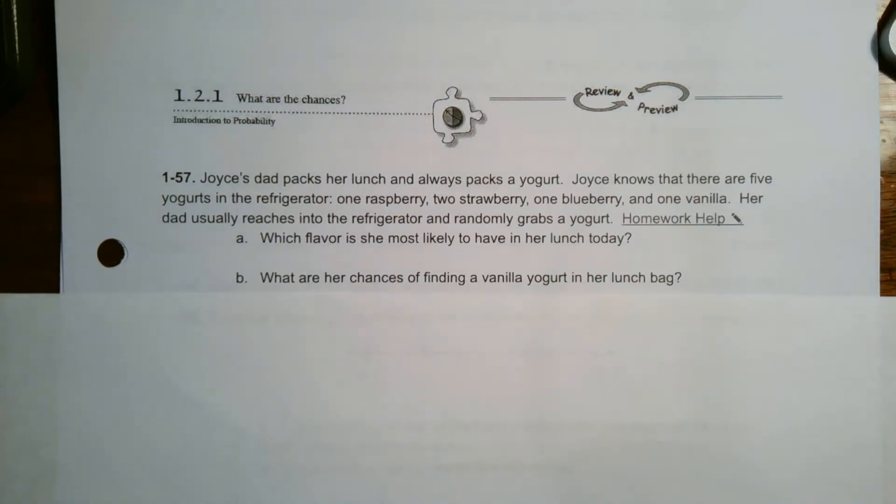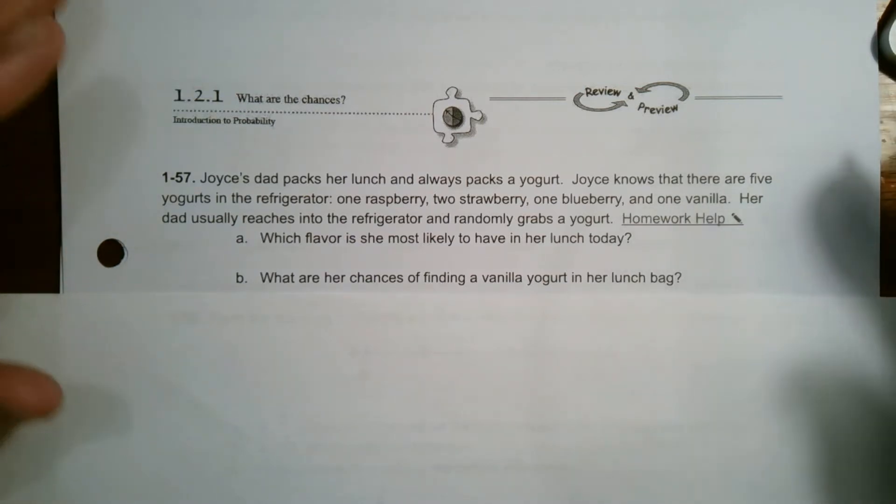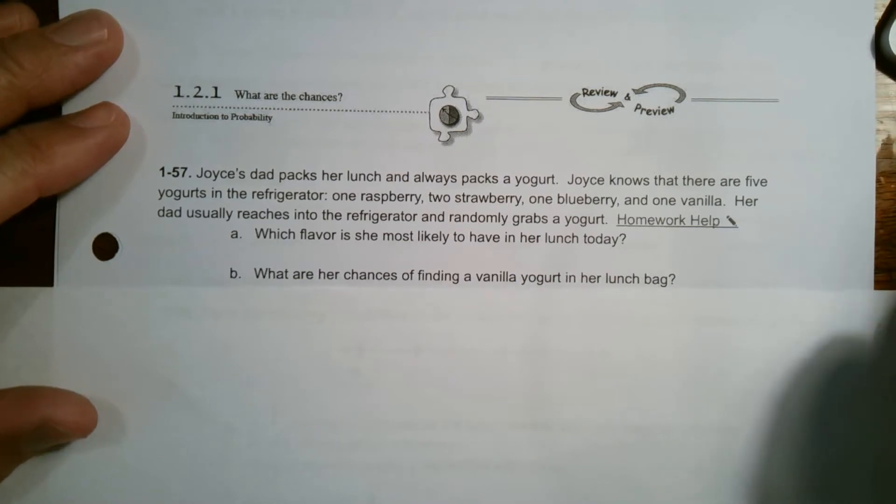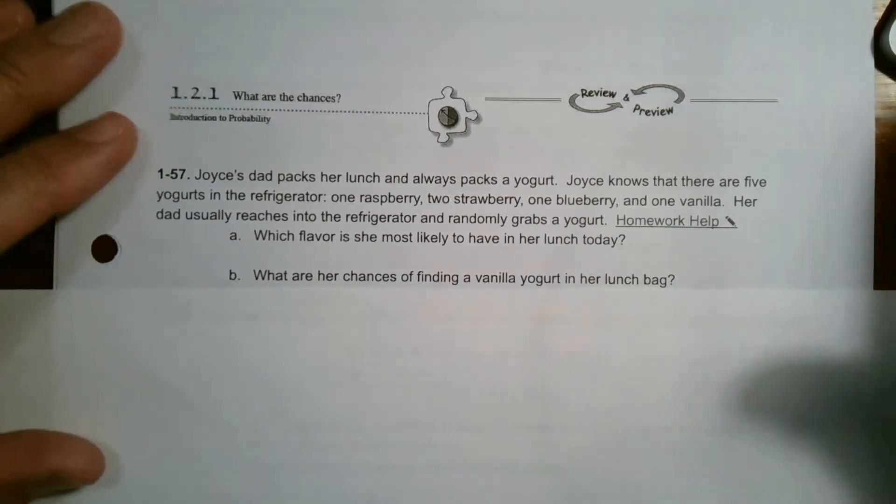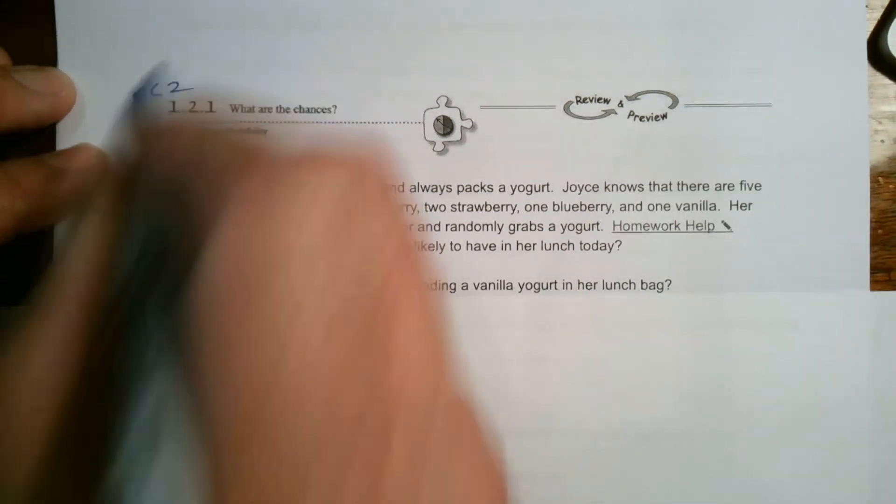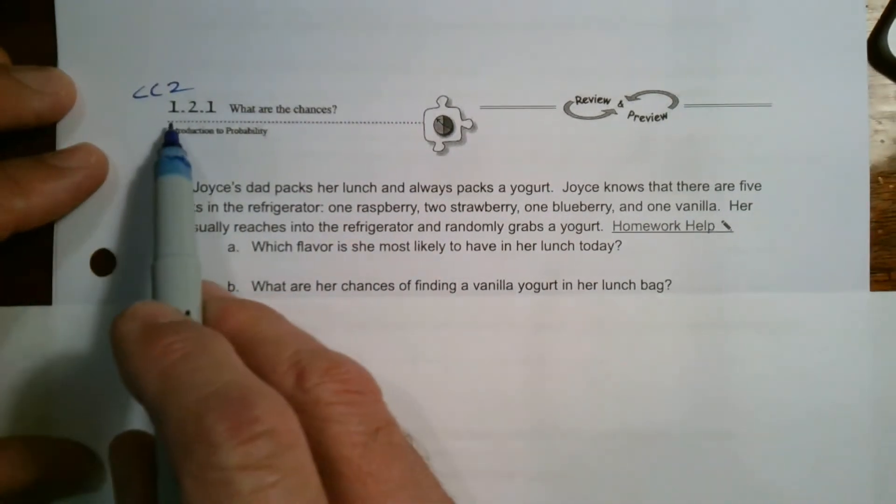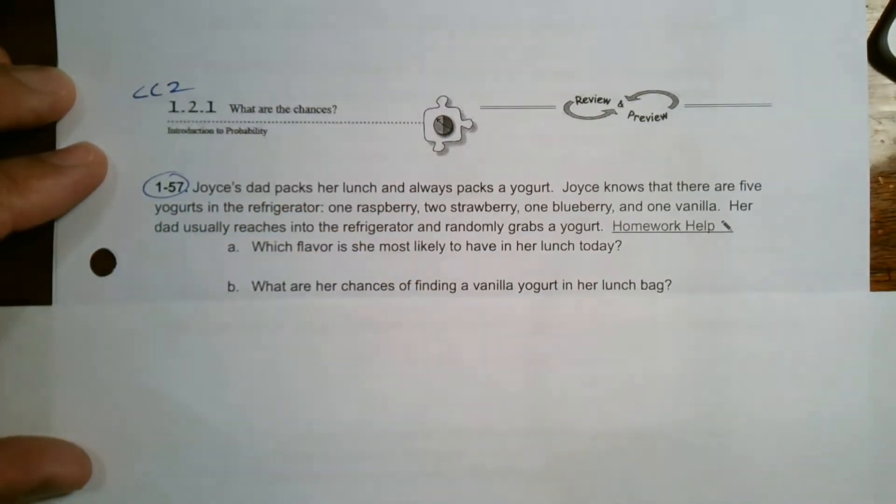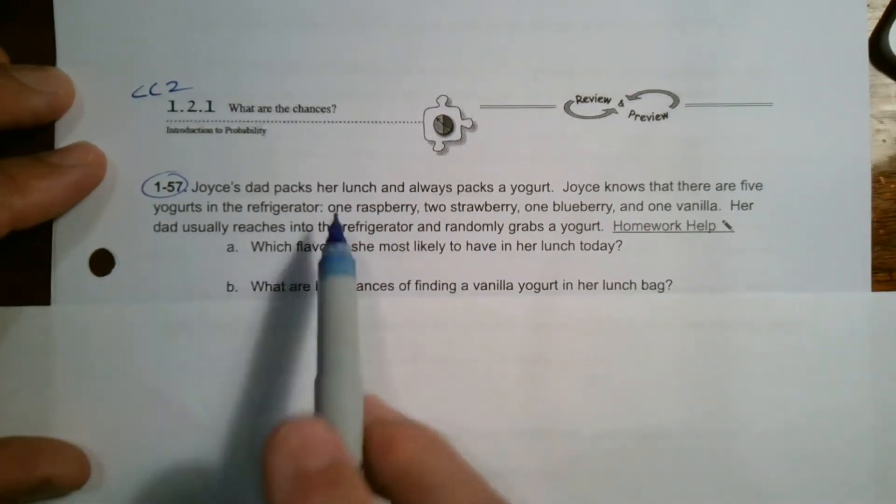Hey folks, Mr. Dell here. We're looking at a problem about probability and determining the chances you have on a random choice. This is from CC2, course two, section 1.2.1, number 1-57. I'll read it and we'll go from there.